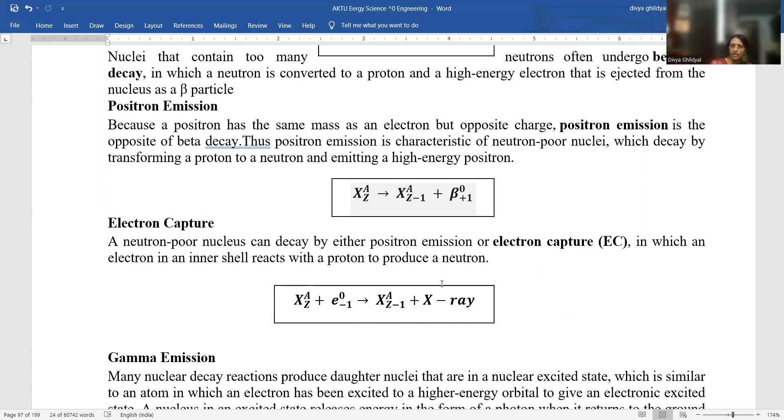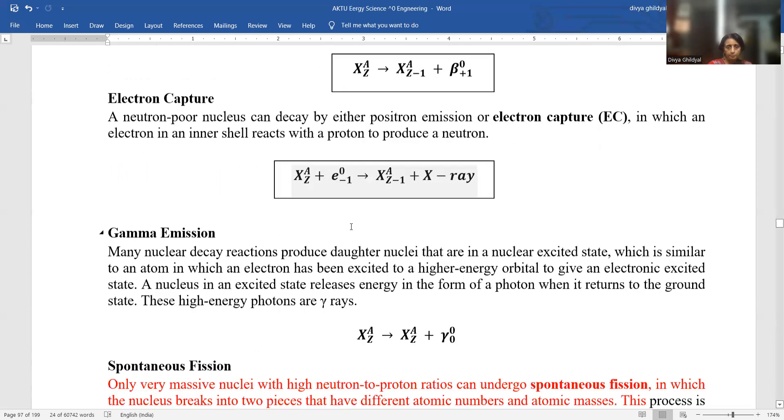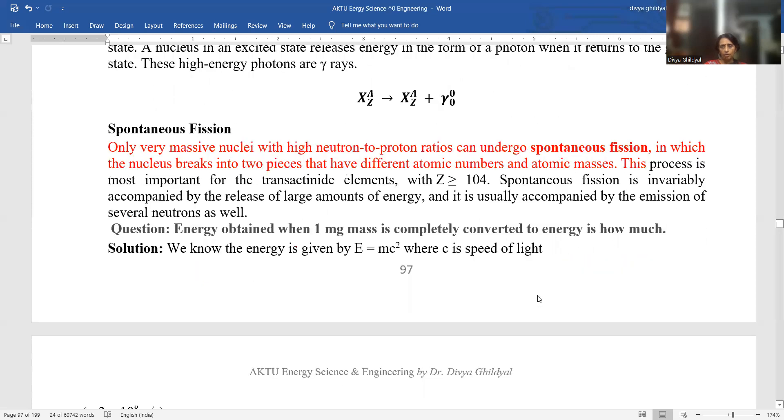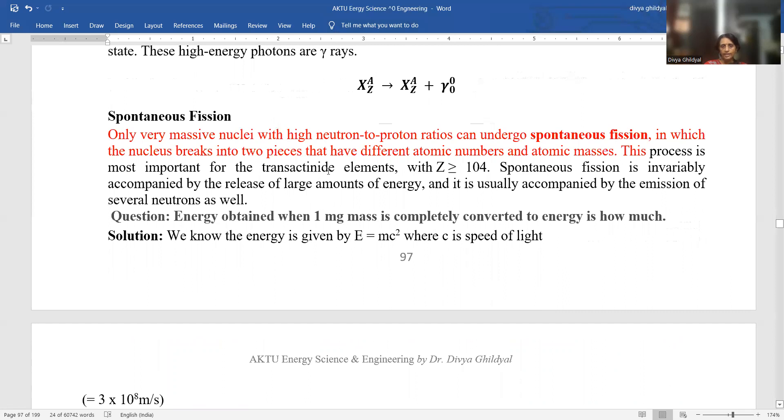Gamma emission. Many nuclear decay reactions produce daughter nuclei that are in nuclear excited state, which is similar to an atom in which an electron has been excited. A nucleus in an excited state releases energy in the form of a photon when it returns to the ground state. These high energy photons are gamma rays. Spontaneous fission: very massive nuclei with high neutron to proton ratios can undergo spontaneous fission in which the nucleus breaks into two pieces that have different atomic number and atomic masses. This process is important for transactinite elements where the atomic number is greater than 104.